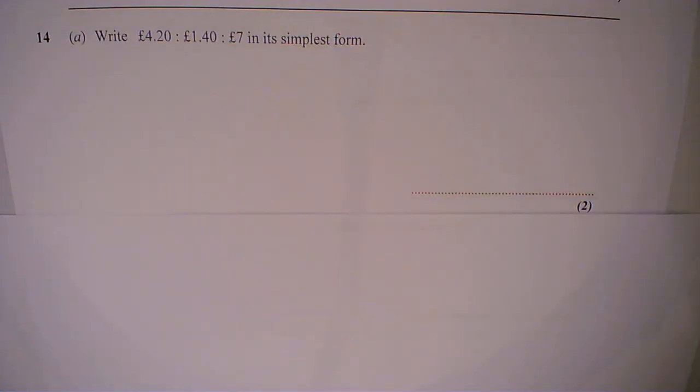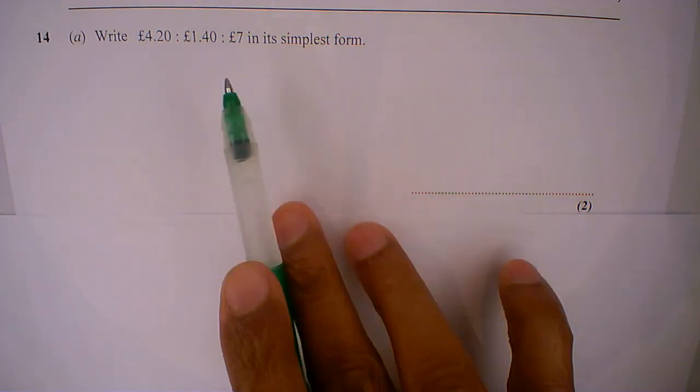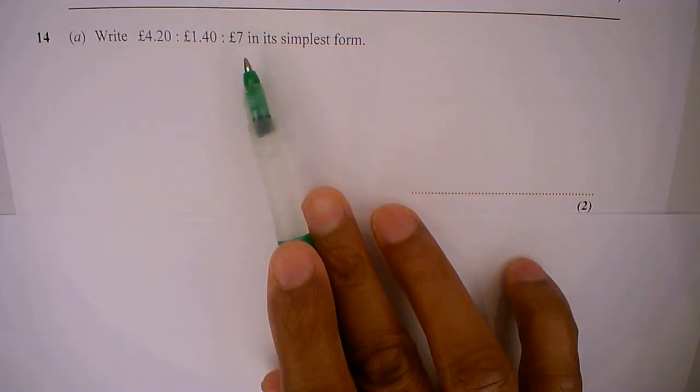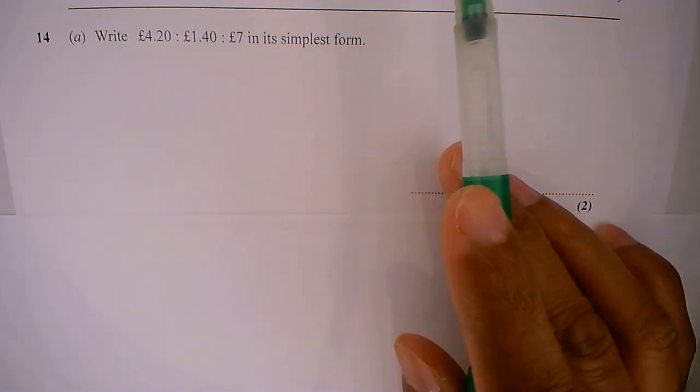So how do we work this out? Let's go through the question: Write £4.20 to £1.40 to £7 in its simplest form.